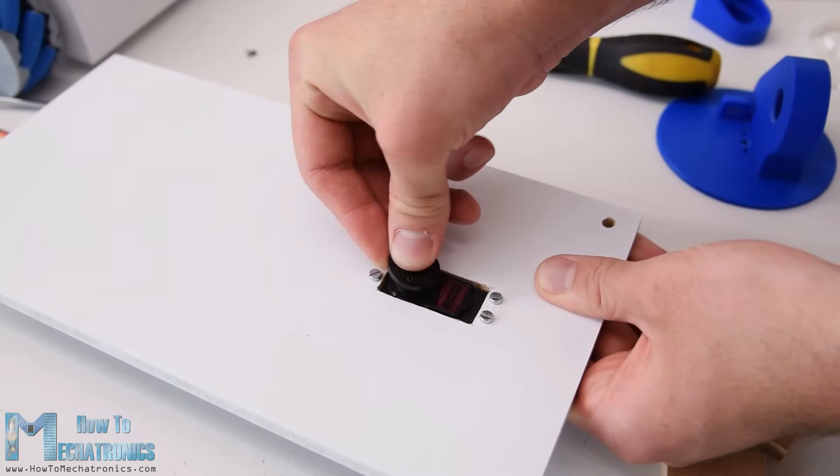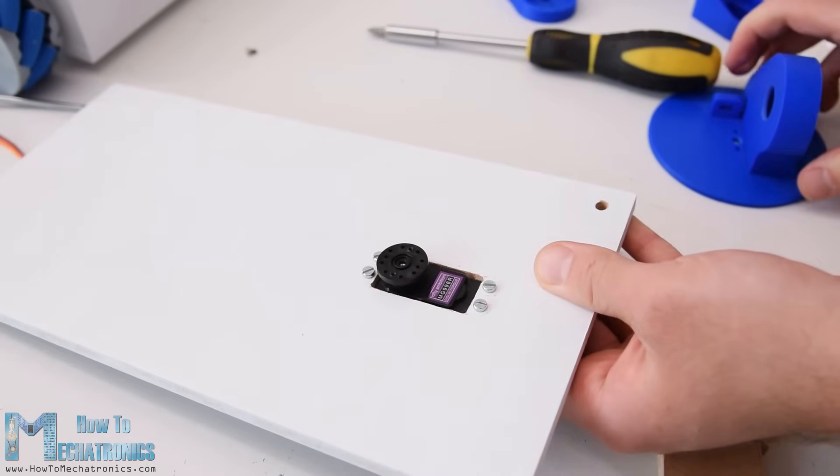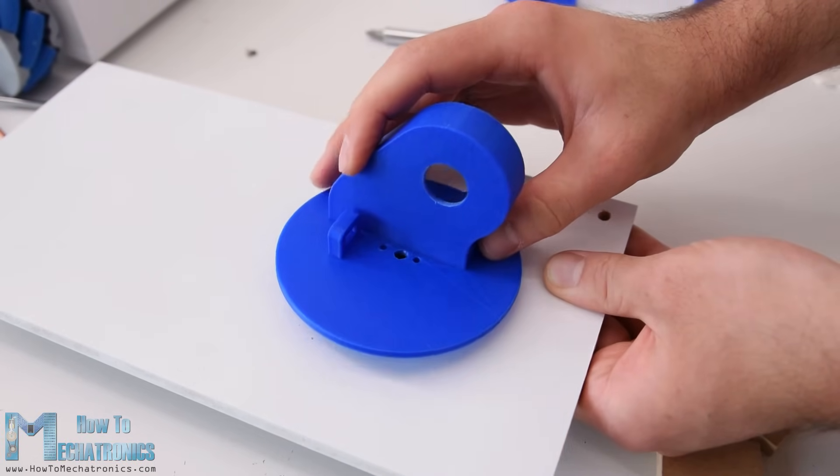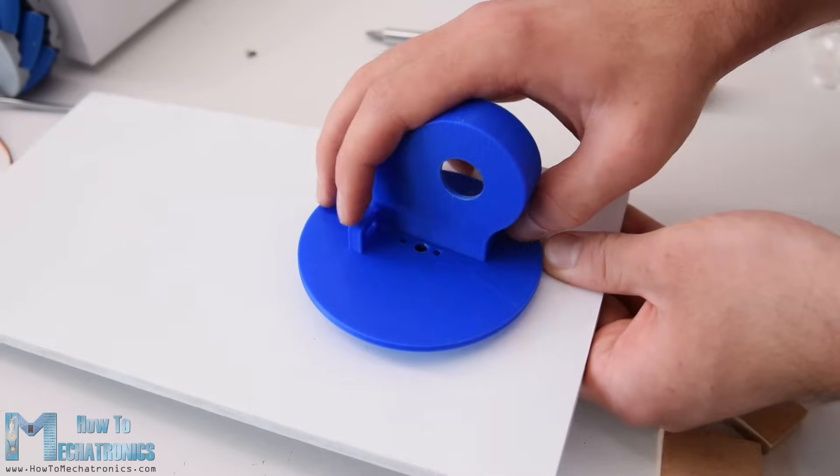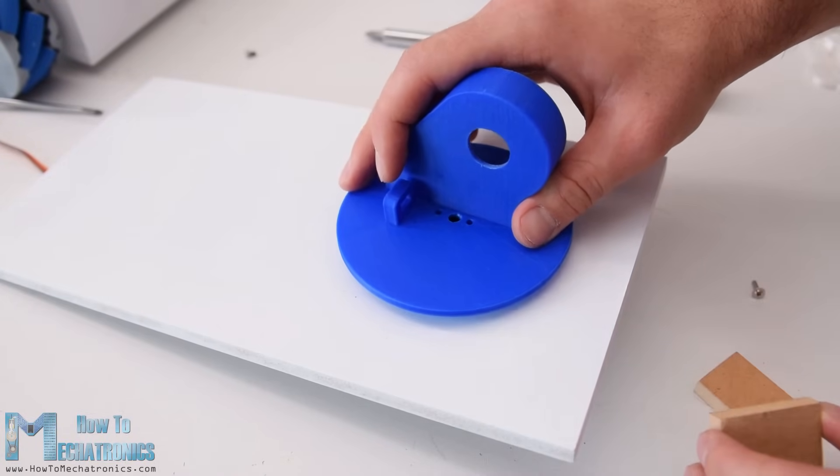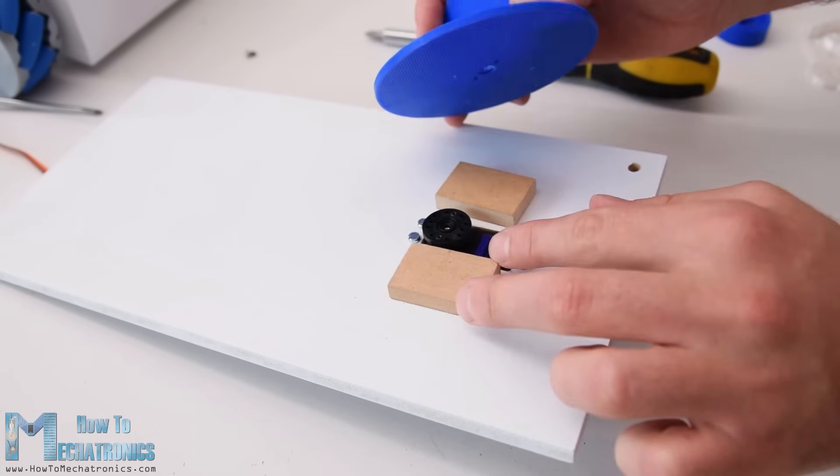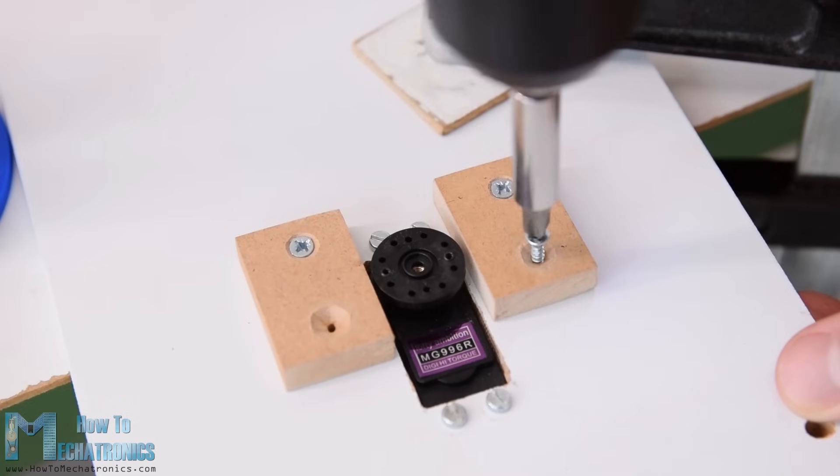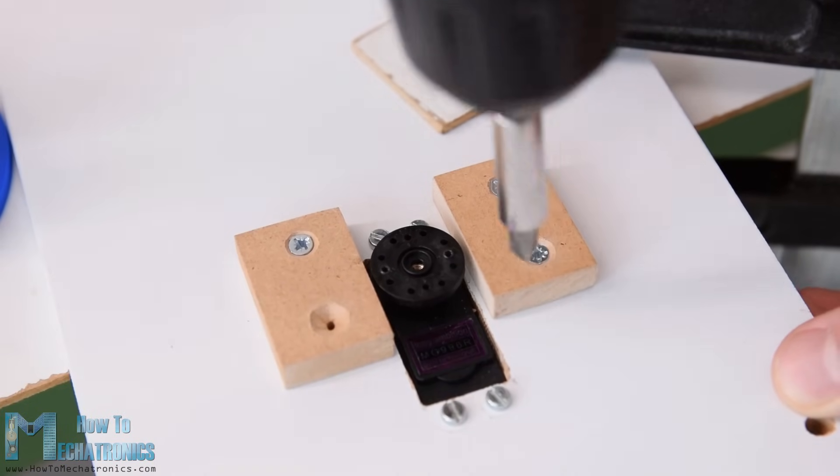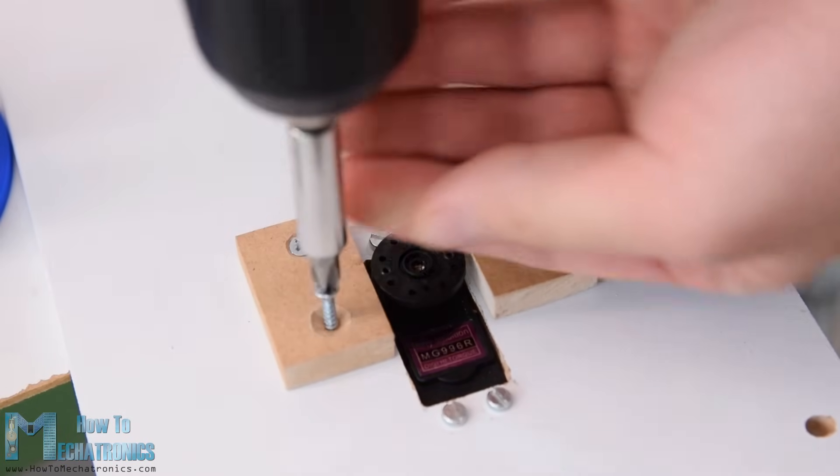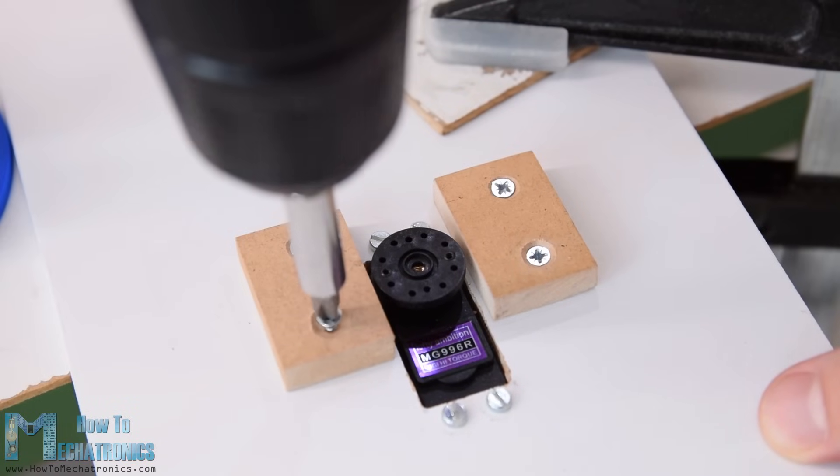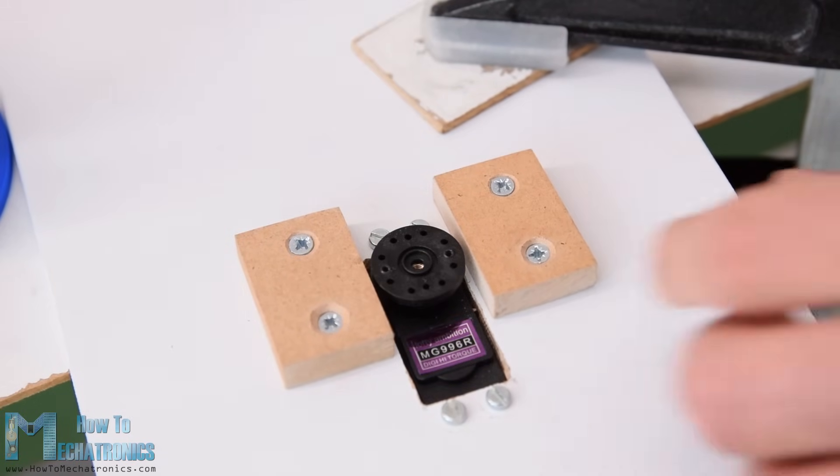Then on the output shaft of this servo, using the round horn that comes as accessory with the servo, we need to attach the next part or the waist of the Robot Arm. However, we can notice that in this way the part stays around 8mm above the plate. So, therefore, I attached two pieces of 8mm MDF board, so that the waist part can slide on them and so the joint will be more stable.